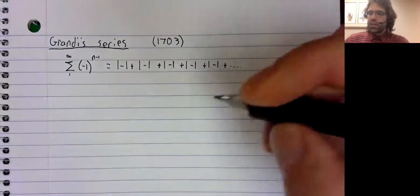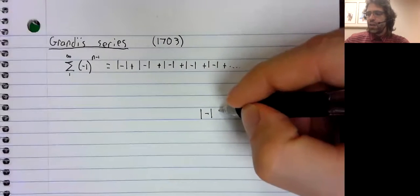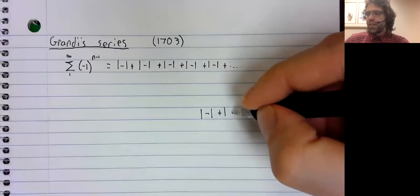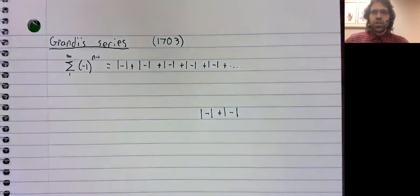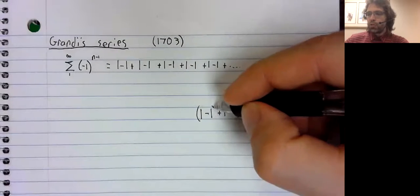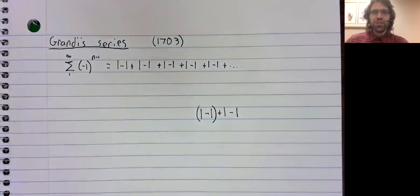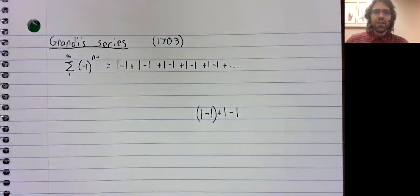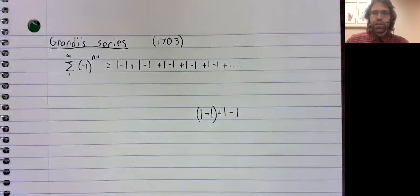In particular, if you have a finite sum, addition in a finite sum is associative. You can put parentheses into a finite sum and it doesn't change anything. With this infinite series...